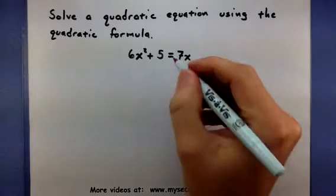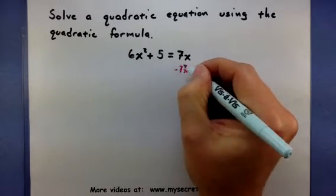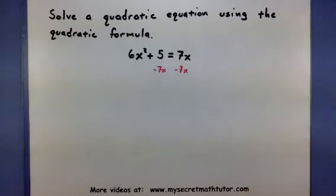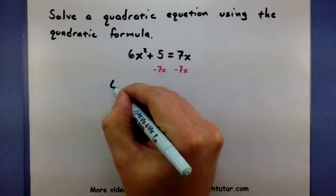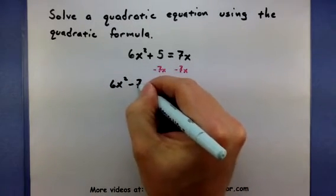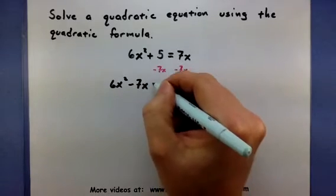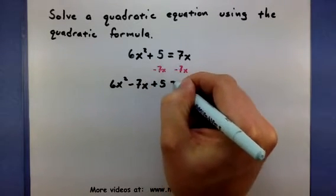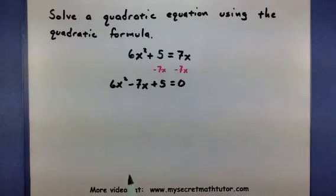So what I'm going to do here is move my 7x to the other side, and then I want to write my powers of x in descending order. That means I'll start with 6x squared, then write my minus 7x followed by my 5 equals zero. So I have x squared, x to the first, and no x's.